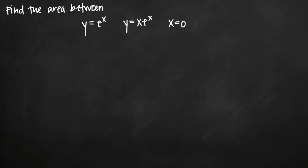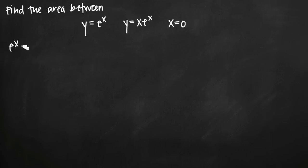We're going to have to do a few steps in order to figure this out, and the first thing we need to do is figure out where these curves intersect one another. The way that we'll do that is by setting them equal to each other. Since both curves are set equal to y, we can set e to the x and xe to the x equal to one another and then solve for x.